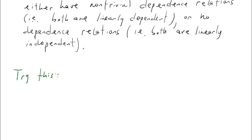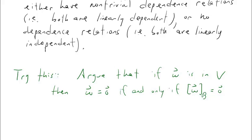Here's a good warm-up exercise to try on your own: argue that if w is in v, then w equals 0 if and only if its coordinate vector equals 0. Note that the 0 corresponding to w is in v, and the 0 corresponding to the coordinate vector is in Rn. Put this on pause, and we'll check answers when we do the proof.